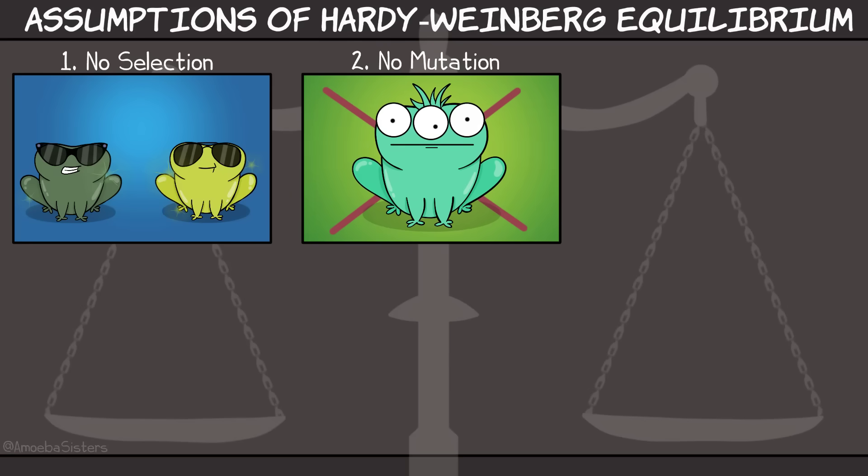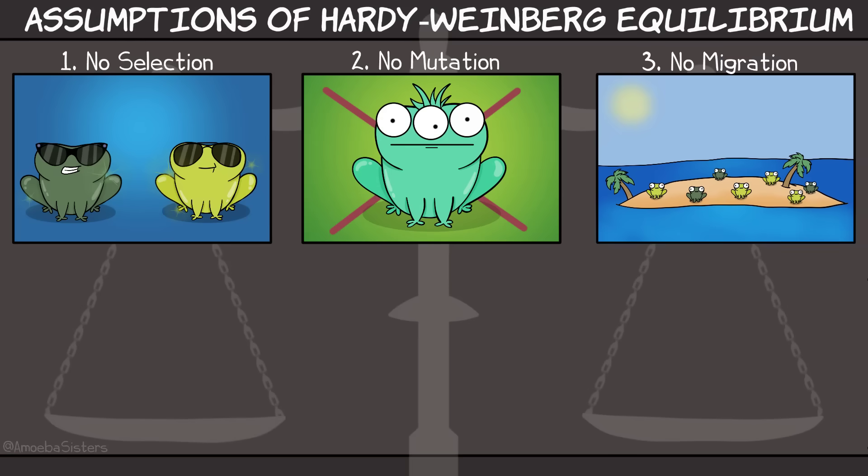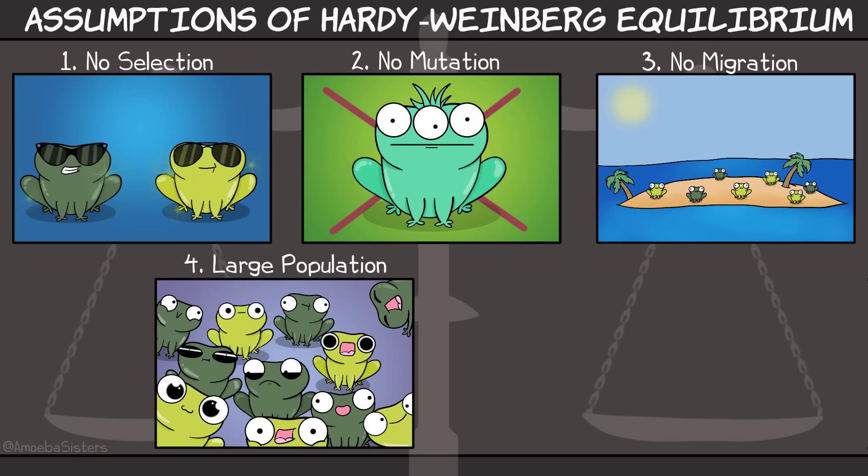Number three, no migration. Frogs can't come in, frogs can't go out. Number four, large population. There are a lot of frogs. It turns out small populations are more vulnerable to genetic drift by the way. See our genetic drift video.